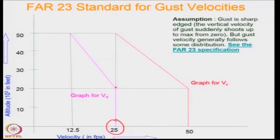But above 20,000 feet at higher altitudes, the weather disturbances are less. So the gust velocity to be considered is linearly reduced. And at the height of 50,000 feet or above, it is assumed that there will be no gust velocities acting at all.